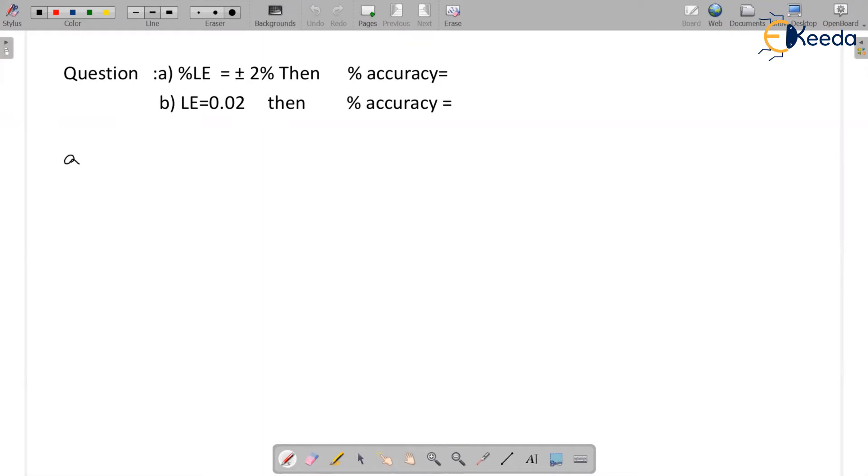Okay, now first let's come for percentage limiting error is equal to plus or minus 2%, then percentage accuracy is equal to 98%.